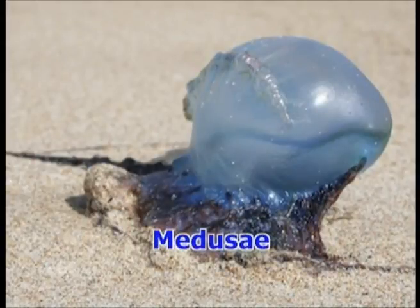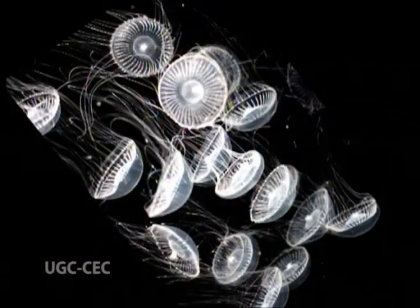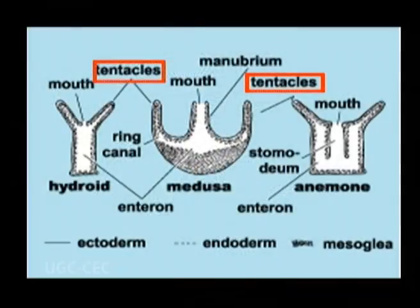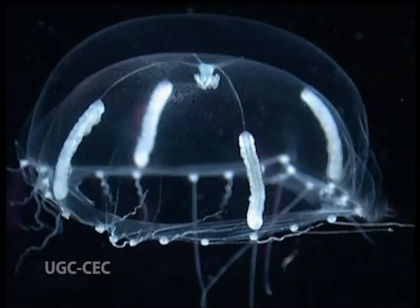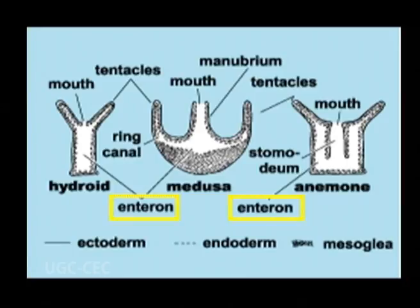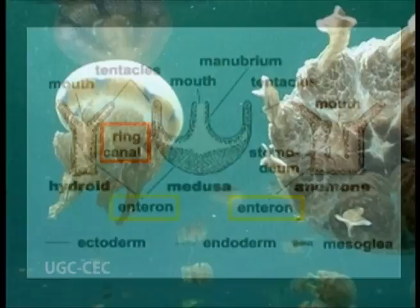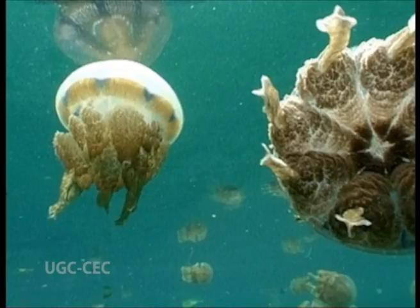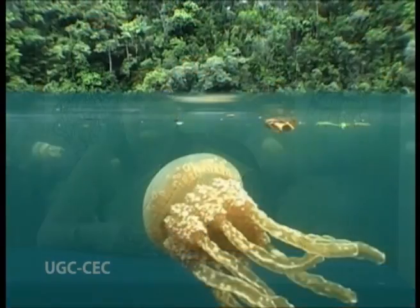Second, Medusae. They have a saucer-shaped or umbrella-like structure with marginal tentacles and a mouth present centrally on the lower concave surface. The enteron is restricted to the central gastric cavity and canals. These are free swimming forms. Polymorphism is observed in hydrozoans and anthozoans of this phylum. Let us now have a detailed idea regarding the various polymorphic patterns that are observed in these animals.